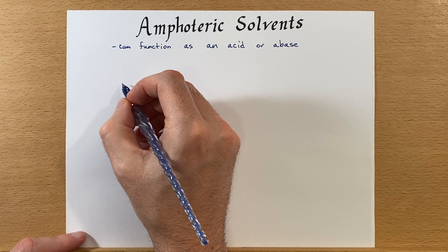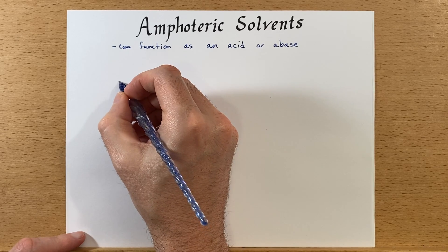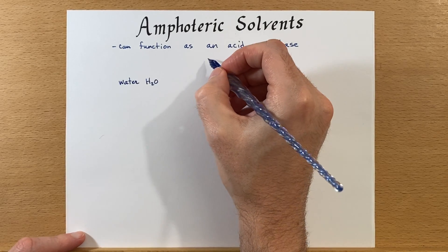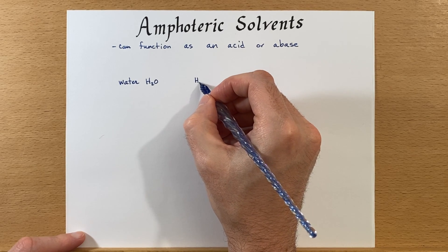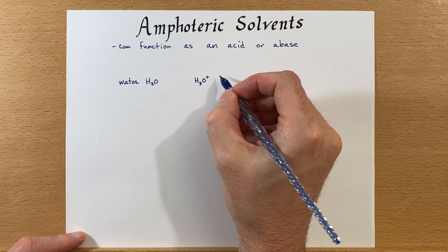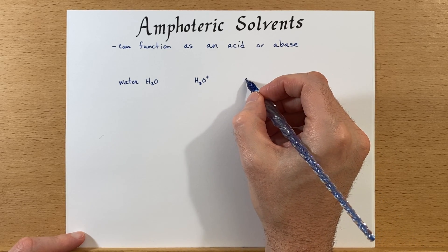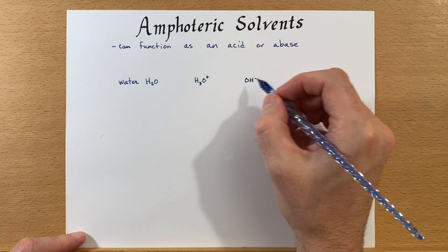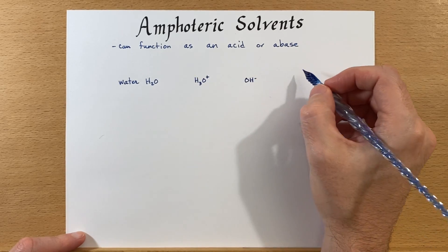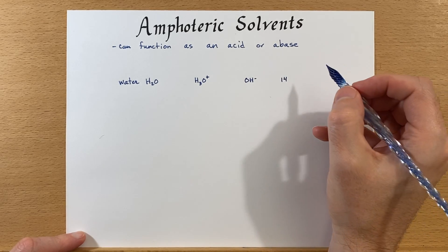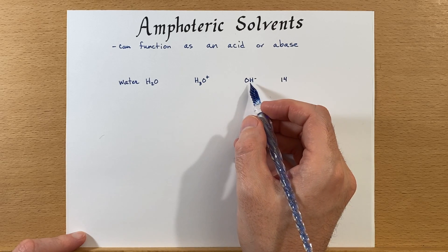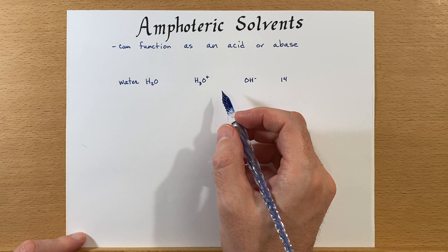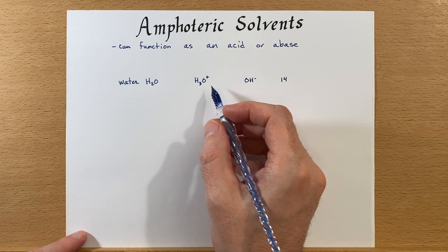Water is an excellent solvent, and it is also able to function as an acid or a base. The acidic form is the hydronium ion, H3O+, and the basic form is the hydroxide ion, OH-. Its pKw — because it's for water — is 14. That means the equilibrium expression for this is 1×10⁻¹⁴. So when water autoionizes, it makes a relatively small amount of these two species.